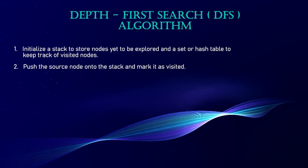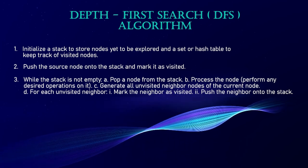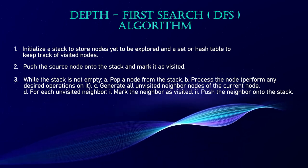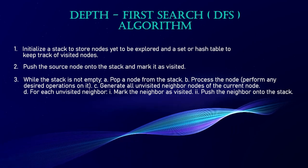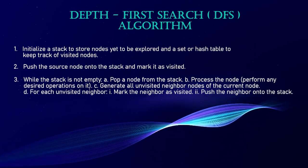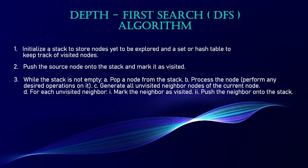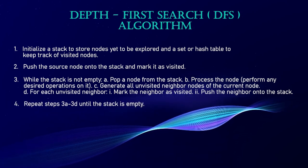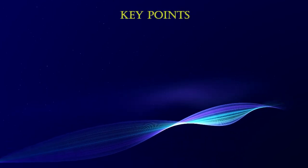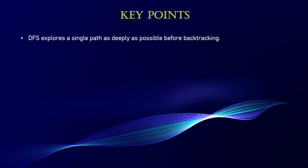Step two: push the source node onto the stack and mark it as visited. Step three: while the stack is not empty — (a) pop a node from the stack, (b) process the node, performing any desired operation on it, (c) generate all unvisited neighbor nodes of the current node, (d) for each unvisited neighbor: mark the neighbor as visited and push the neighbor onto the stack. Step four: repeat step three (a) to (d) until the stack is empty.